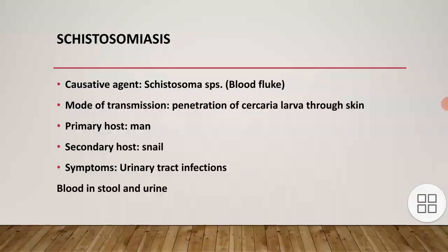Next is schistosomiasis, whose causative agent is Schistosoma species — it is a blood fluke. Mode of transmission is penetration of cercaria larvae through the skin. Primary host is man and secondary host is snail.